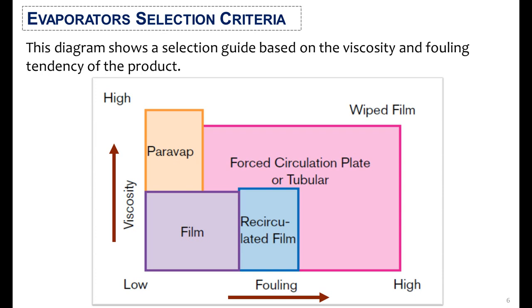This diagram shows a selection guide based on the viscosity and fouling tendency of the product. If both viscosity and fouling tendency are low, then film type evaporators can be used. If they are very high, wiped film evaporators can be used. If viscosity and fouling are at a mid-level, then recirculated film or forced circulation plate or tubular evaporators can be selected.